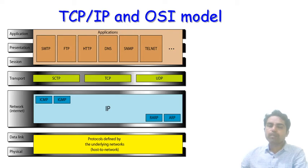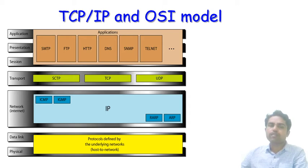In the last class we discussed all five layers of TCP/IP in detail. The physical and data link layers are defined by underlying host-to-network technology. The network layer has four protocols: ICMP, IGMP, RARP, and ARP. The transport layer has TCP and UDP. The application layer has many protocols including SMTP, FTP, HTTP, DNS, SNMP, and Telnet.